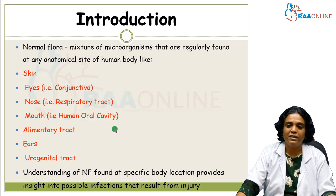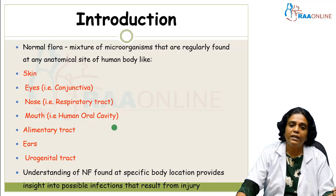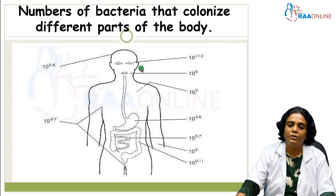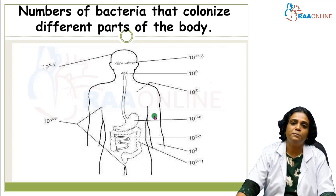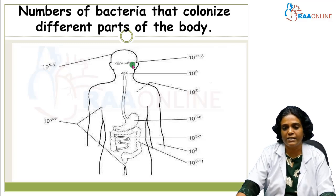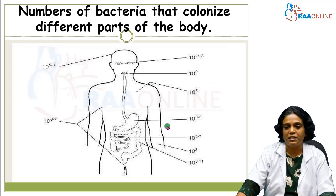We need to understand the location, advantages, and disadvantages of these normal flora because it gives us a clear insight into what possible infections they can cause if there is a breach from their normal site of location. These normal flora are abundantly present in the gastrointestinal tract, especially the colon, followed by the oral cavity, skin, small intestine, conjunctiva, urogenital tract, and the respiratory tract.